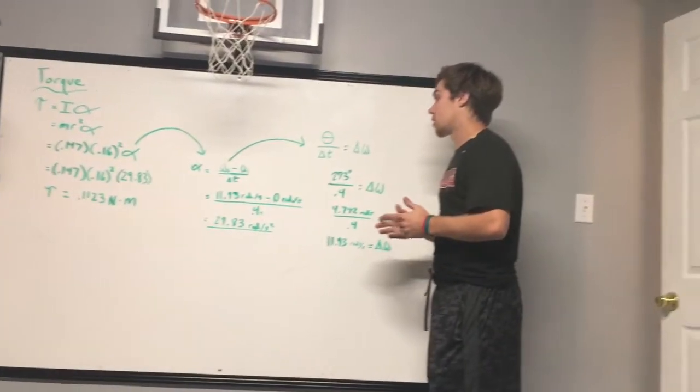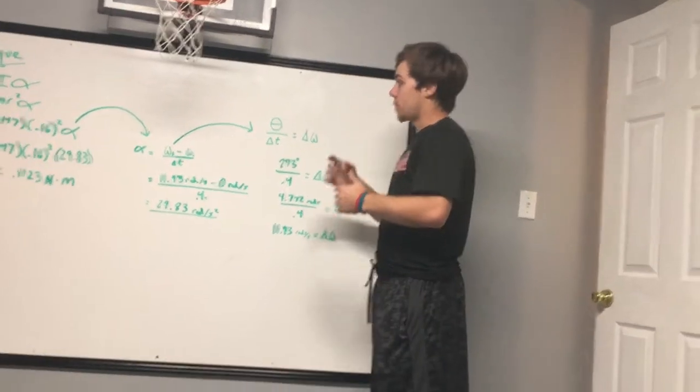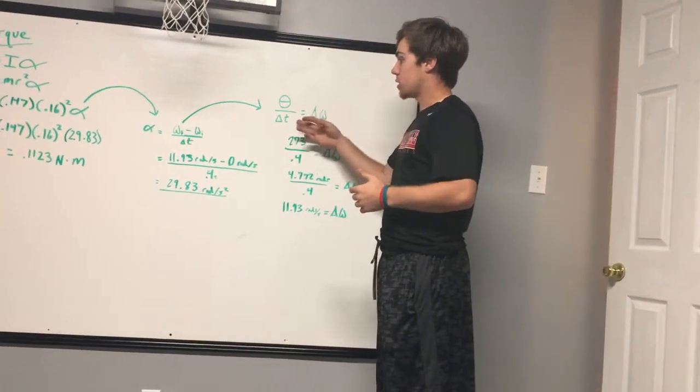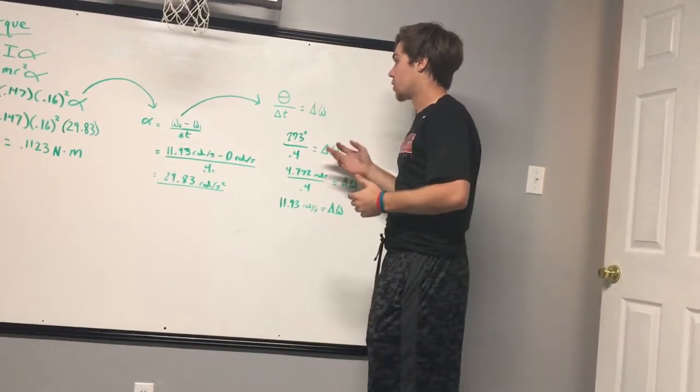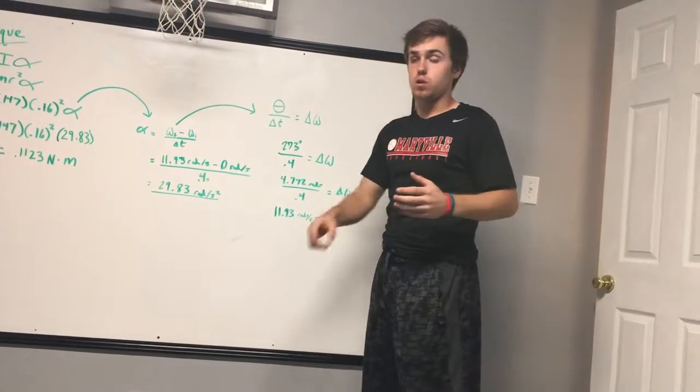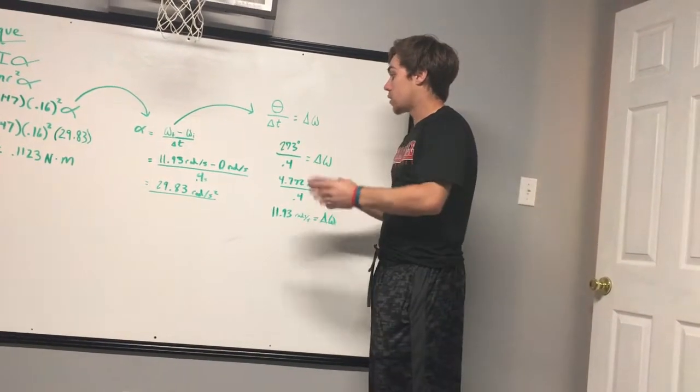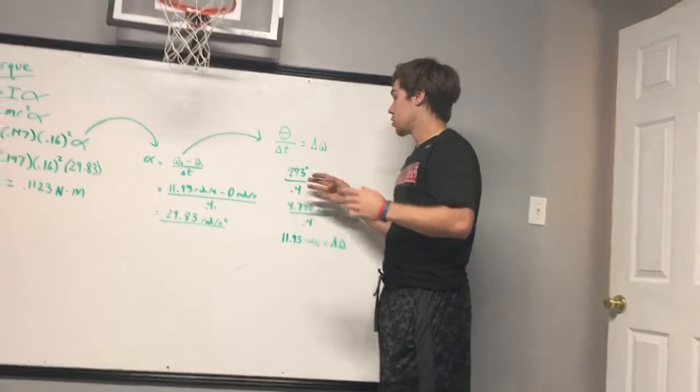So we made a formula to find omega, and omega is the amount of spins in degrees over time. So we went frame by frame in our videos of the bottle flips and found that it went just over 270 degrees.